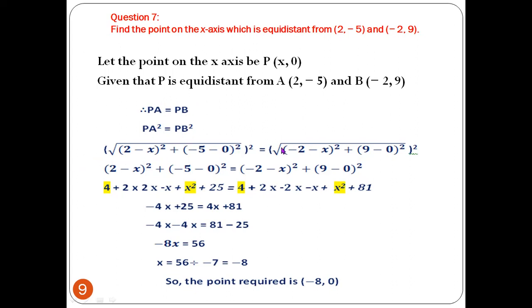For PA and PB, we write the formula using the distance formula: (x2 - x1)² + (y2 - y1)². Here x2, y2 are the coordinates of A, and in the second one it is B. x1, y1 we are taking as P(x, 0). So: (2 - x)² + (-5 - 0)².